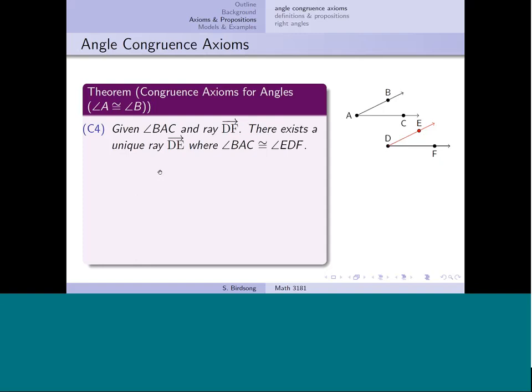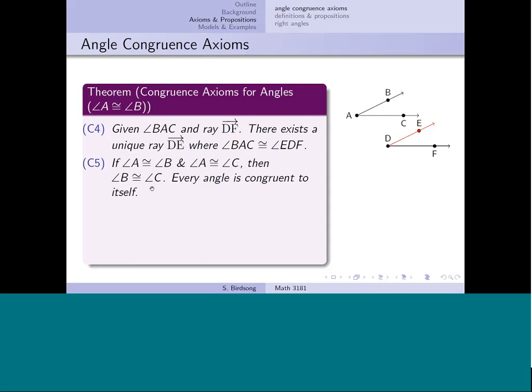C5 is just logic: if angle A is congruent to angle B and also congruent to angle C, then all three of those angles are congruent to each other, and every angle is congruent to itself. Notice that C4 and C5 look exactly the same as the first two congruence axioms for line segments — you just replace everything about line segments with angles.